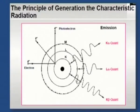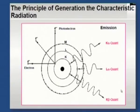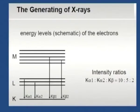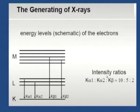K alpha and K beta are the two important characteristic line spectra obtained from a copper or molybdenum target. The intensity ratio of K alpha 1 to K alpha 2 to K beta is 10:5:2, so K alpha 1 has the highest intensity. The K alpha radiation from the target is generally used to probe and study crystal structures. That is why we discuss the energy levels — K shell, L shell, M shell — which give rise to these characteristic radiations.